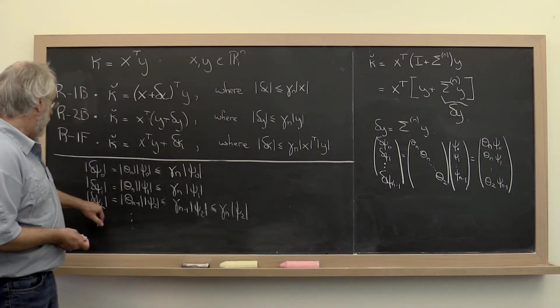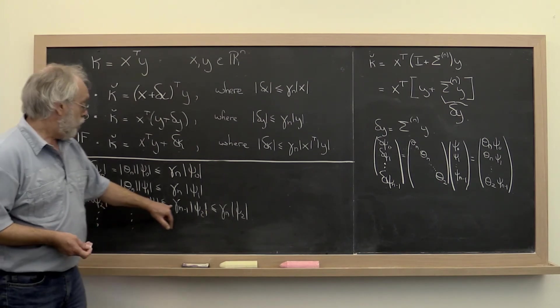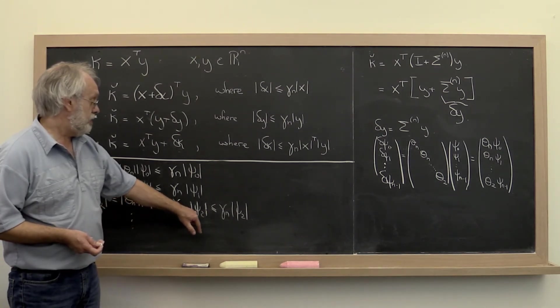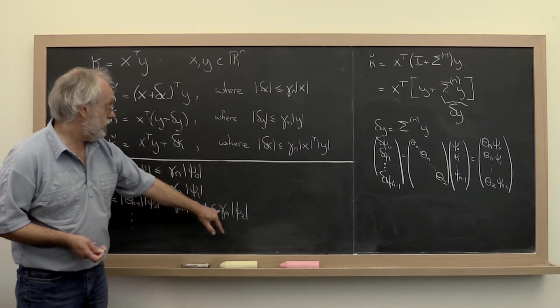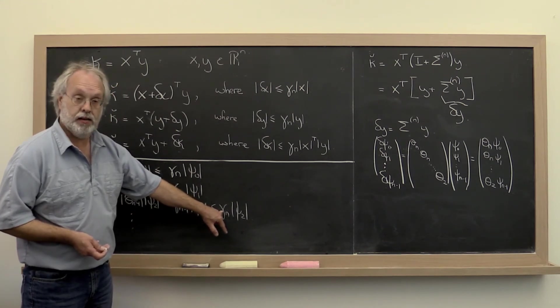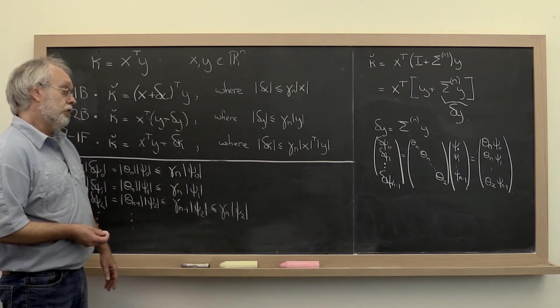If we, when we go on to the absolute value of delta psi 2, we end up with a gamma n minus 1, itself is bounded by gamma n. And obviously we get exactly the same result when we go forward.